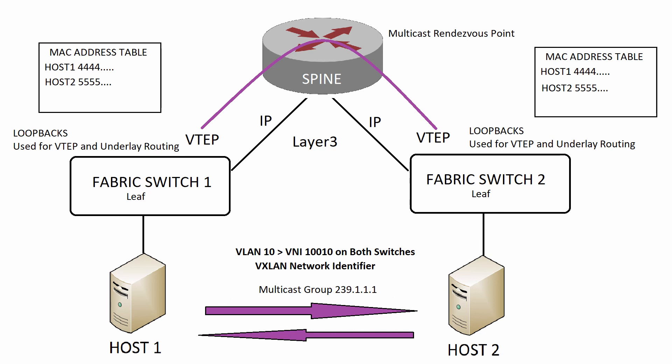Communication between host 1 and host 2 can now be done via unicast, still going through VXLAN encapsulation and decapsulation. We are still using flood-and-learn to populate MAC address tables, which is acceptable in a small environment. However, as more devices are added, flood learning becomes increasingly prevalent. To reduce it, we can use BGP EVPN, which allows switches to share the information they learn from the flood-and-learn process, making the solution much more scalable and effective.